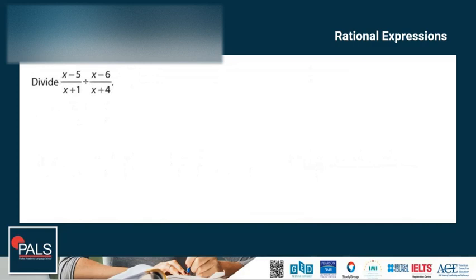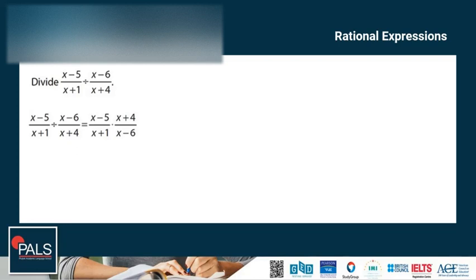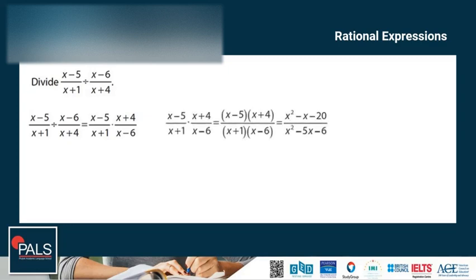Another example: x minus 5 over x plus 1, divided by x minus 6 over x plus 4. Flip and multiply — we have x minus 5 over x plus 1, times x plus 4 over x minus 6. There are no terms that can be cross-canceled, so we proceed to multiply across. The final answer is x squared minus x minus 20 over x squared minus 5x minus 6.